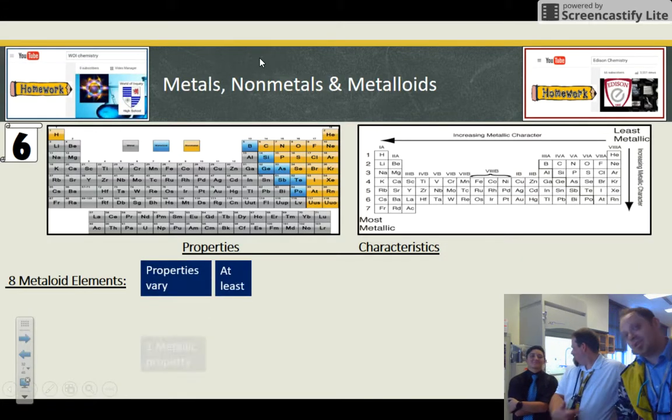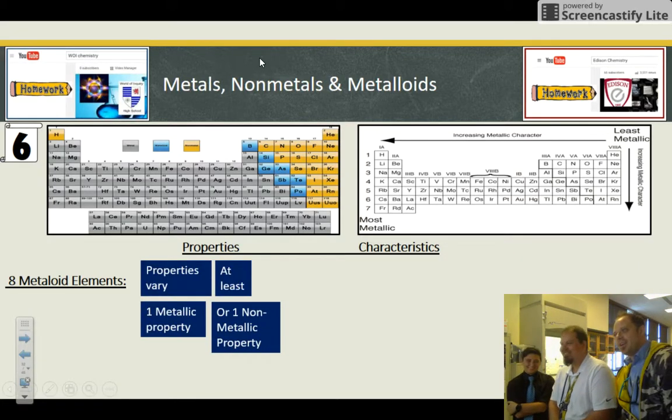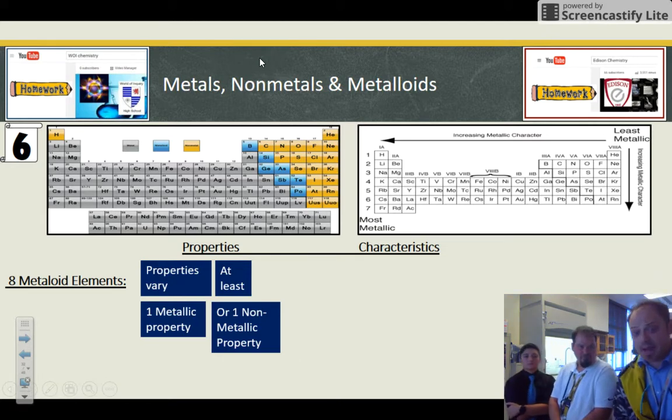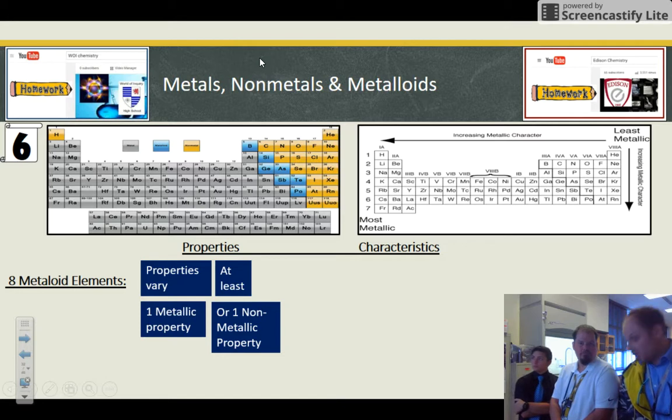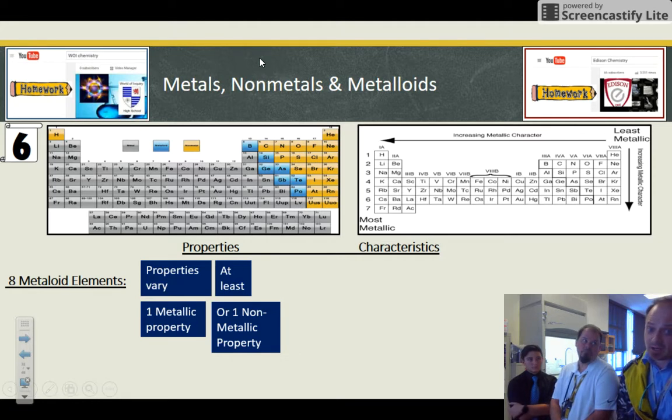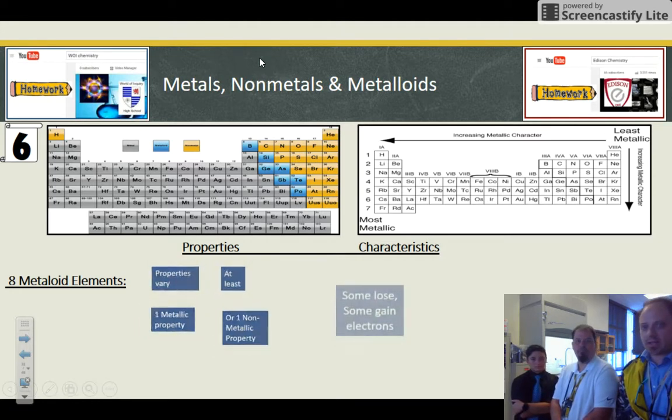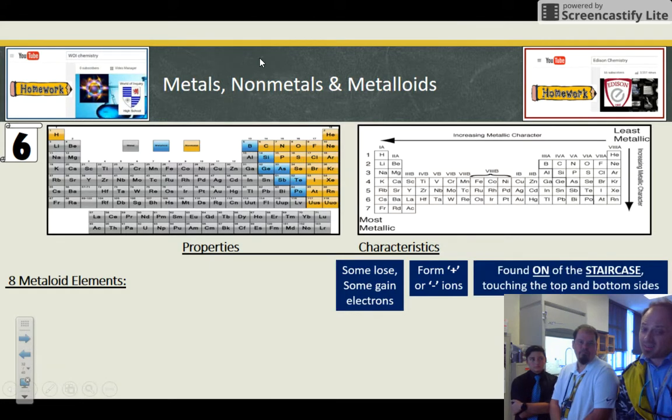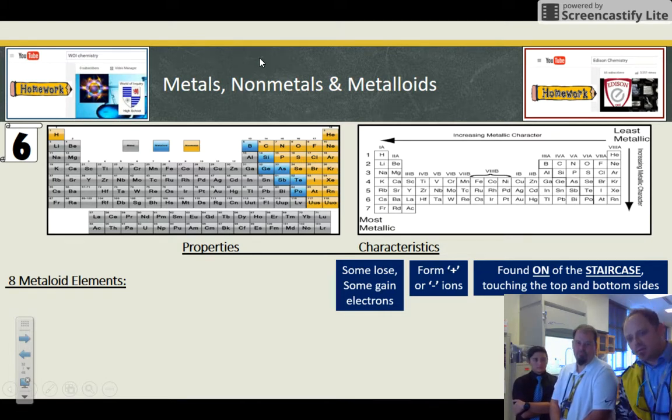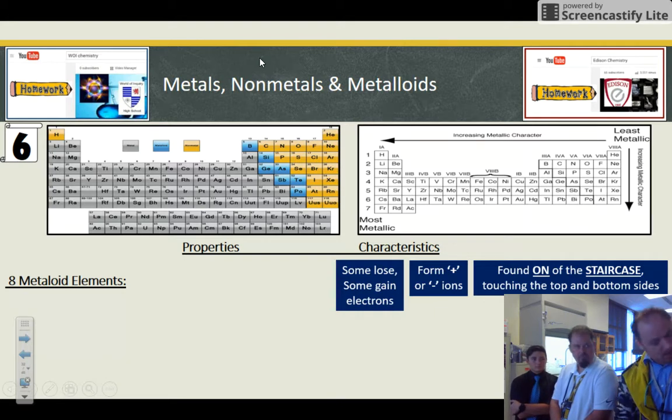Let me hit up the eight metalloids. These properties may vary. They have at least one metallic property and at least a non-metallic property. For example, silicon conducts electricity but it's brittle. And it's shiny metallic unless you smash it and it turns black. So it's like it doesn't know where it really wants to live. So some gain and some lose electrons. They form a variety of ions, mostly positive, sometimes negative. You can't really tell aside from memorizing the seven or eight metalloids. You look at, oh it looks like a metal, then you test it. Oh it's actually not. But it is. But it's not. I don't know.